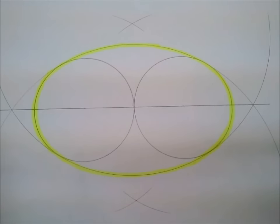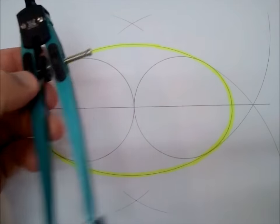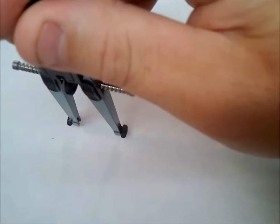I call this the 1-2-3 oval. It's a real simple way to make an approximation of an ellipse using only a ruler and a compass. Start by drawing two circles that touch each other.